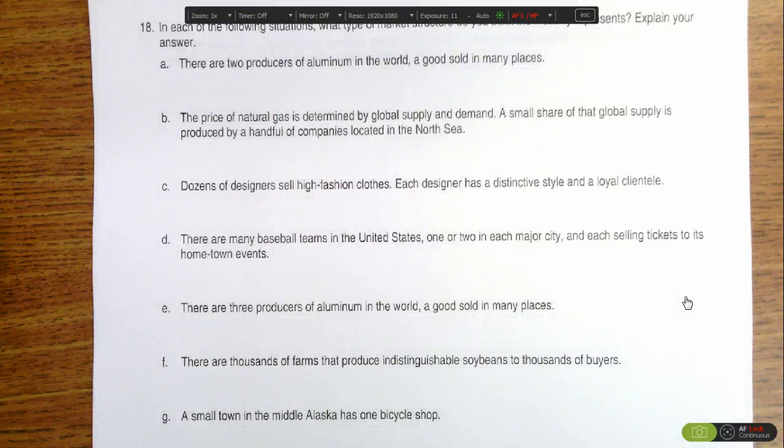Part F, there are thousands of farms that produce indistinguishable soybeans. So the products themselves are indistinguishable, and there are many, many producers of the good. That would make it a perfectly competitive market.